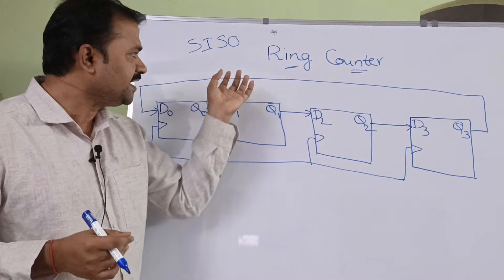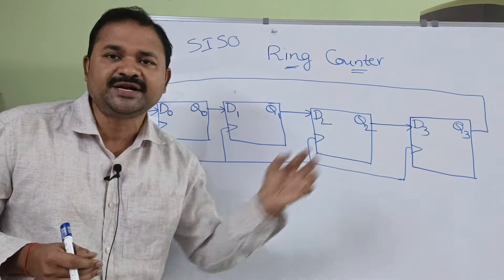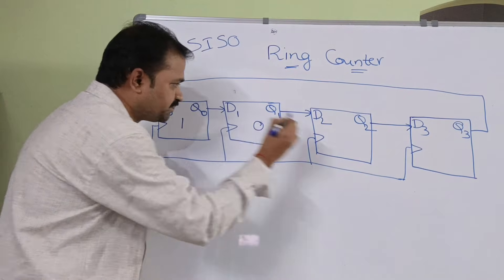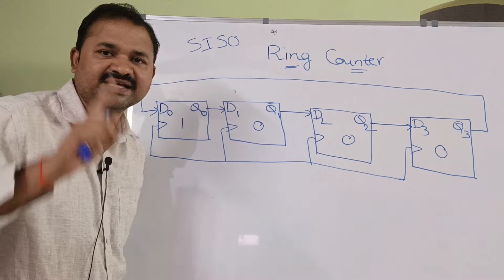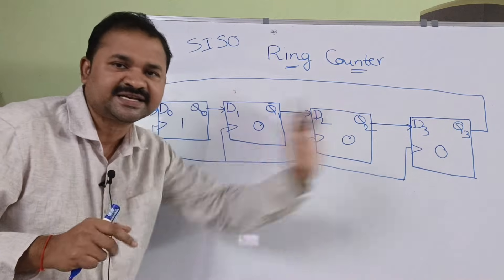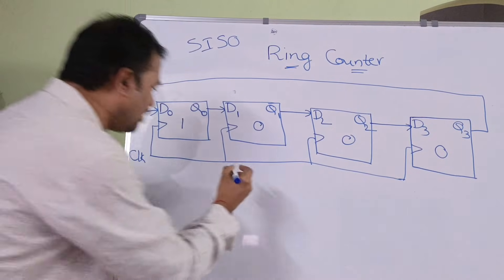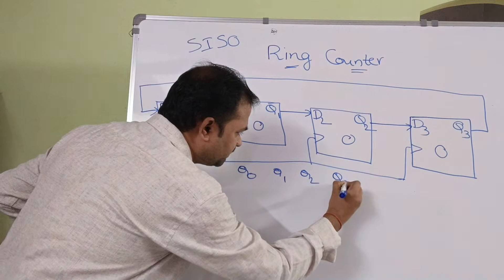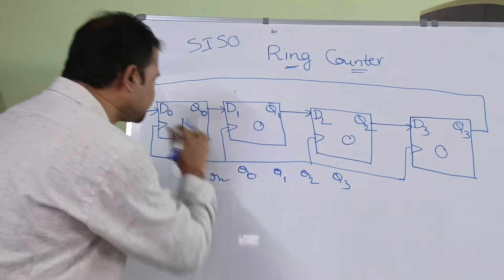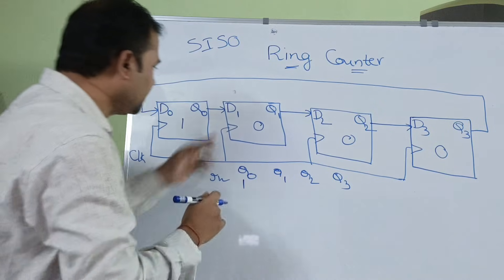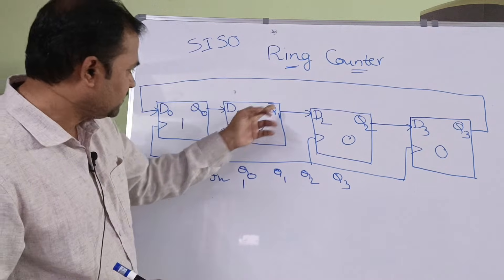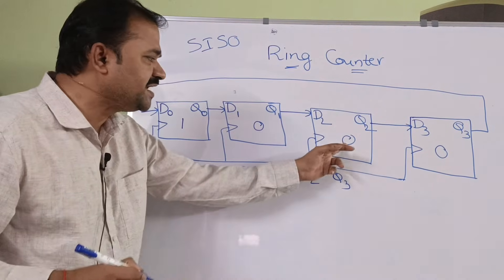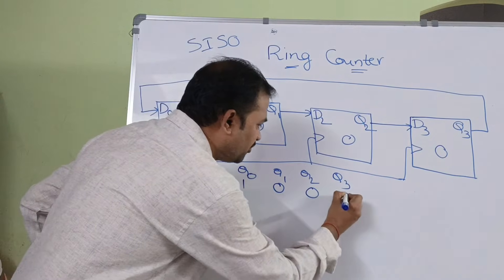A ring counter is initialized with a single one and the remaining bits as zeros. So initially, Q0 is 1 and Q1, Q2, Q3 are 0. The second flip-flop has input D1 as zero, producing Q1 as zero. Similarly, the inputs are zero, so the initial register content is 1, 0, 0, 0.